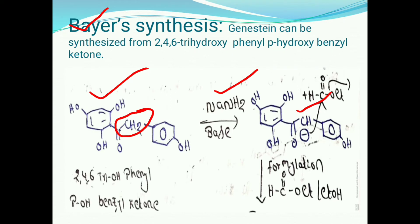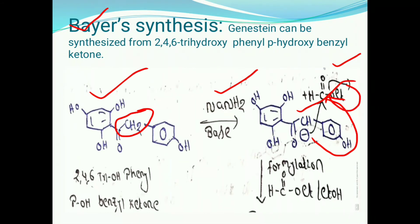This formed compound undergoes a formylation reaction. In this formylation reaction, it is treated with ethyl formate, whose formula is HCOOC2H5. In this reaction, the CH⁻ ion attacks the C=O group in ethyl formate. At the same time, the ethoxy group is removed.